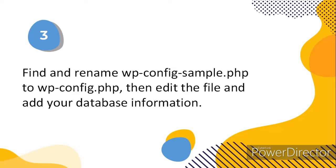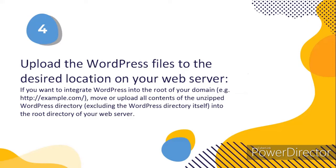Note: if you're not comfortable with renaming files, this step is optional and you can skip it, as the install program will create the wp-config.php file for you. Step 4: upload the WordPress files to the desired location on your web server. If you want to integrate WordPress into the root of your domain, such as www.example.com, then move or upload all the contents of the unzipped WordPress directory into the root directory of your web server, excluding the WordPress directory itself. Do not move the folder — simply move everything inside the folder.